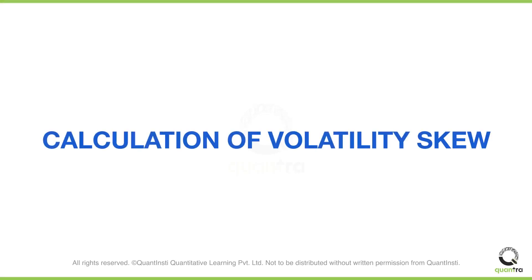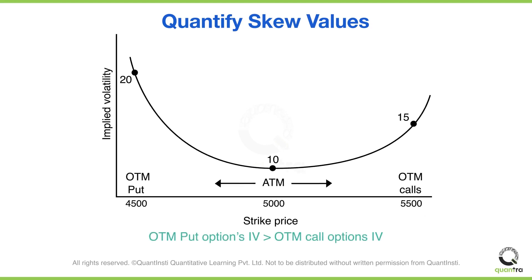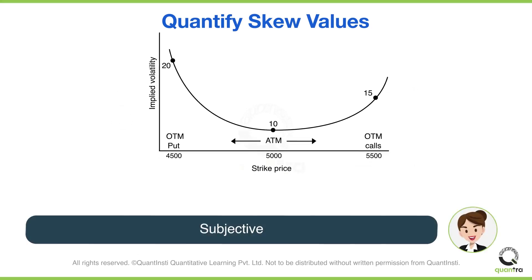Welcome to this video on the calculation of volatility skew. Volatility skew exists in the volatility surface. For out-of-the-money options which are equidistant from the at-the-money options, the out-of-the-money put options IV is higher than the out-of-the-money call options IV. But this can be subjective. We need to devise a method to quantify skew rather than looking at the volatility surface graph.